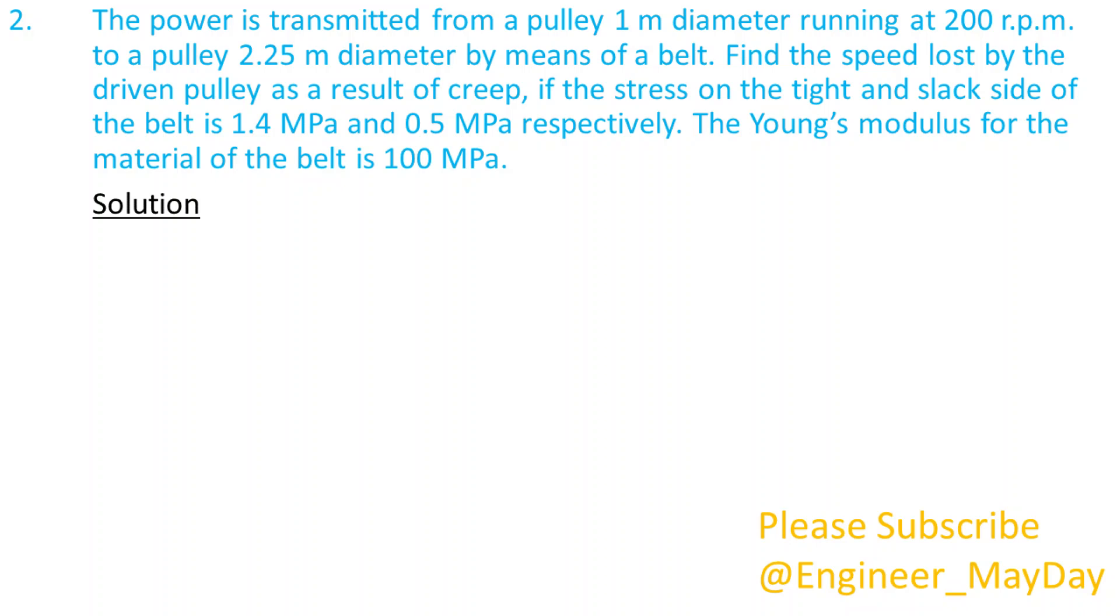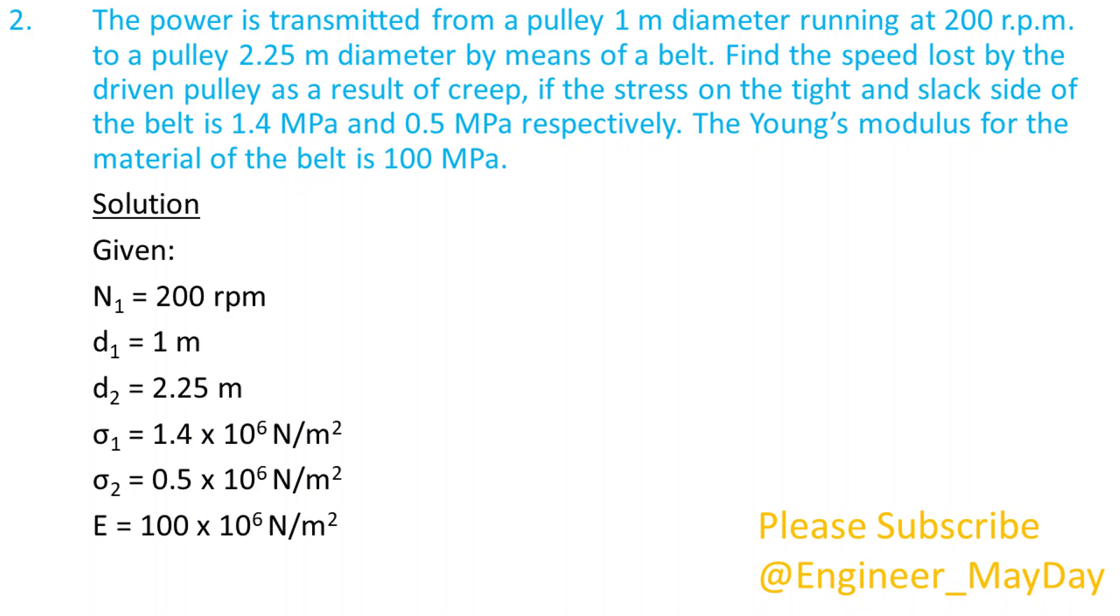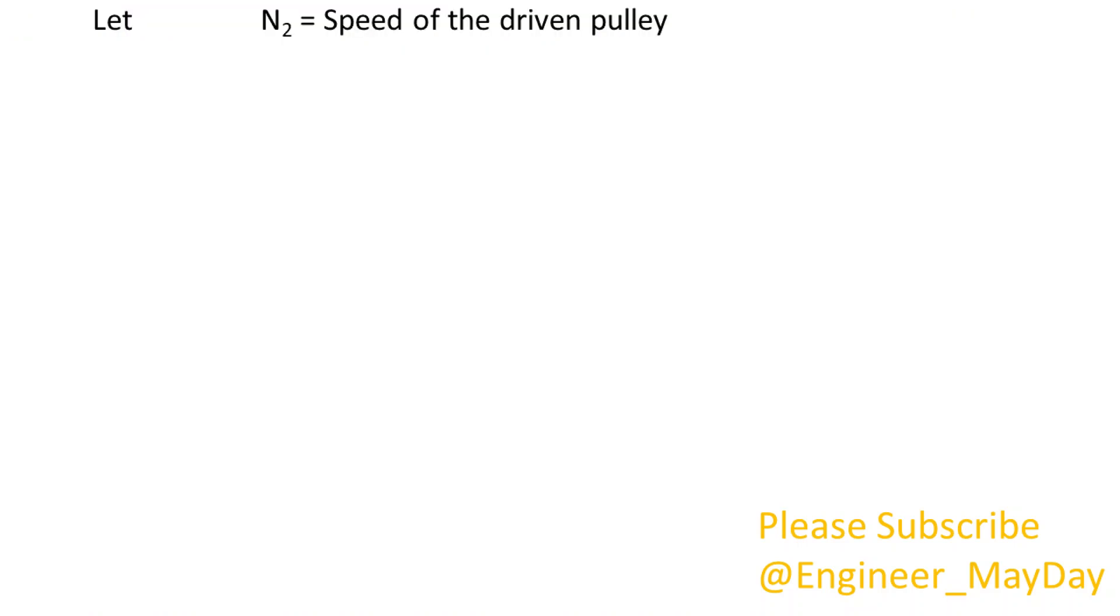Solution. Given N1 equals 200 rpm, D1 equals 1 meter, D2 equals 2.25 meters, Sigma 1 equals 1.4 times 10 to power 6 N per square meter, Sigma 2 equals 0.5 times 10 to power 6 N per square meter, E equals 100 times 10 to power 6 N per square meter. Let N2 be equal to speed of the driven pulley.